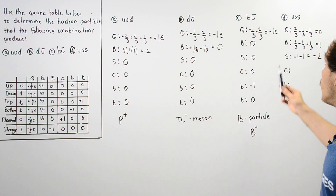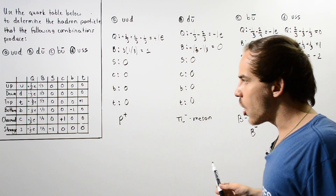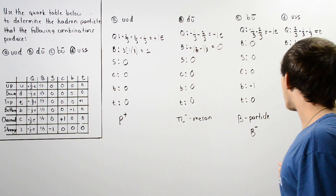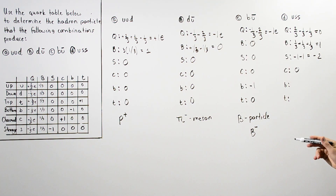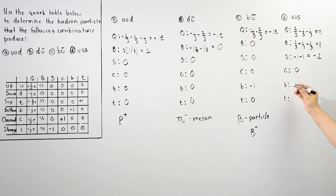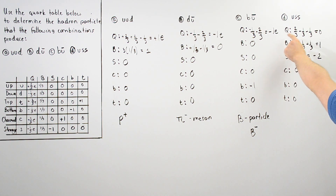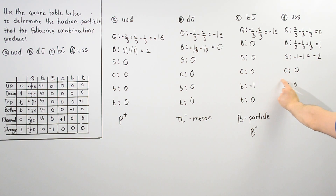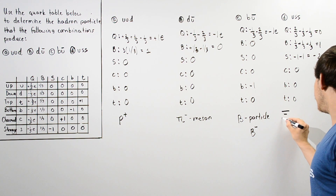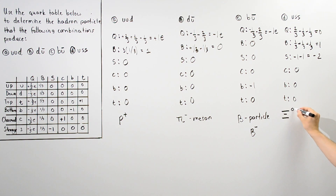The charm is zero because none of these quarks are charmed quarks — only the charmed quark has a charm of positive one. We have no bottom quarks and no top quarks, so bottomness and topness are both zero. The baryon particle that corresponds to a charge of zero, a baryon number of one, a strangeness of negative two, charm of zero, bottomness of zero, and topness of zero is the Xi particle with zero charge.